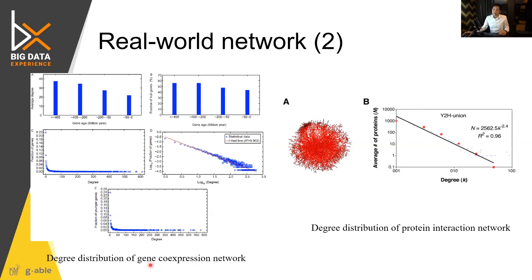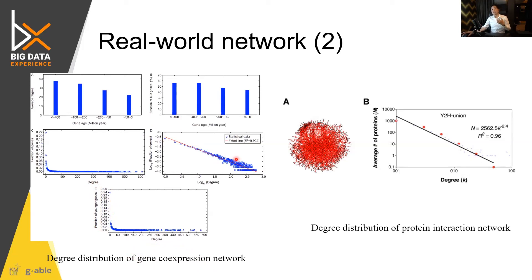Gene co-expression network analysis looks at genes that co-express together. If they co-express with a high degree of correlation, you connect those two genes. Analyzing the gene co-expression network finds that in terms of degree and number of connected genes, it also obeys the power law — meaning our own body obeys power laws.